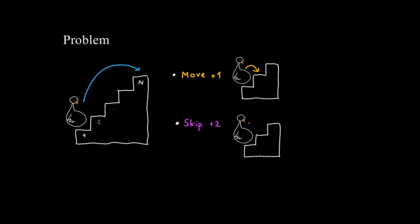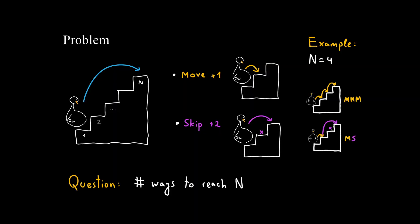Let's solve this problem. There are N steps on a staircase. We start at step number 1 and we want to reach step number N. To do it, we can either move one step forward or skip a step, moving two steps at a time. The question is, how many different ways are there to reach step number N? For example, for N equals 4, there are three ways: move one step at a time, move one step then skip one step, and skip a step and then move a step.